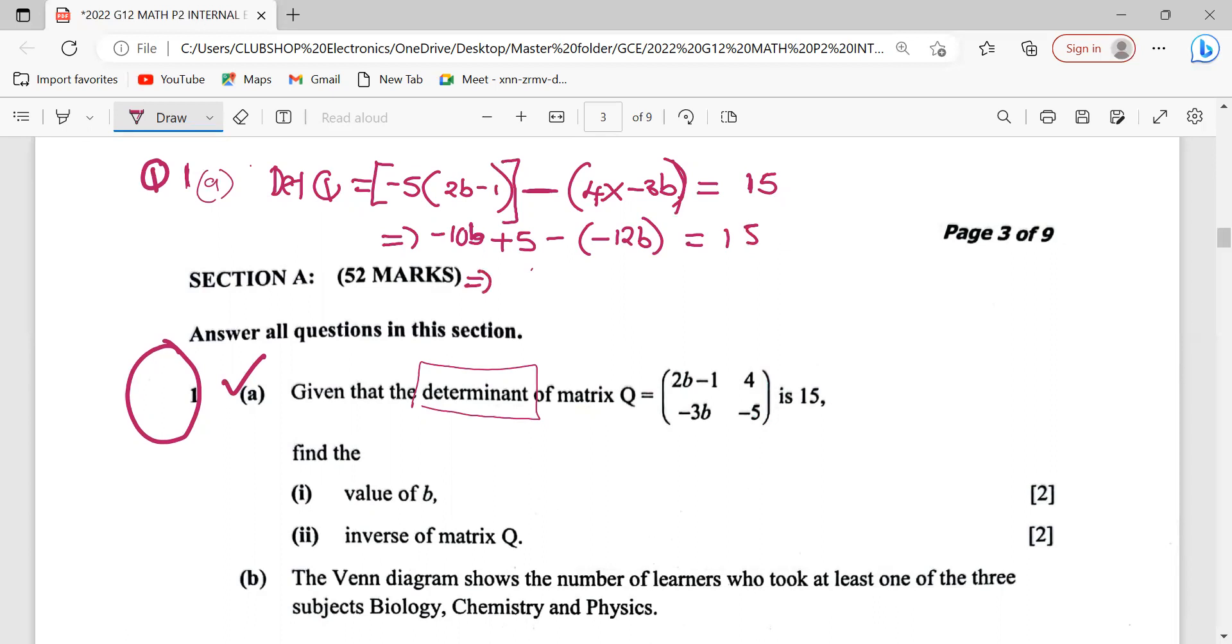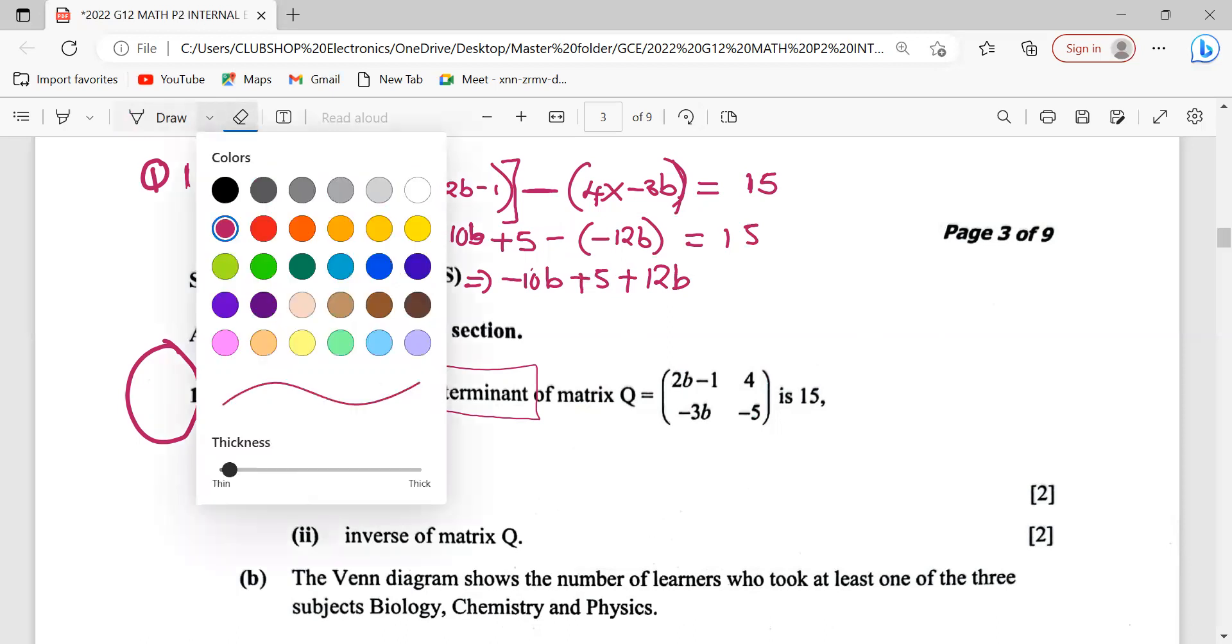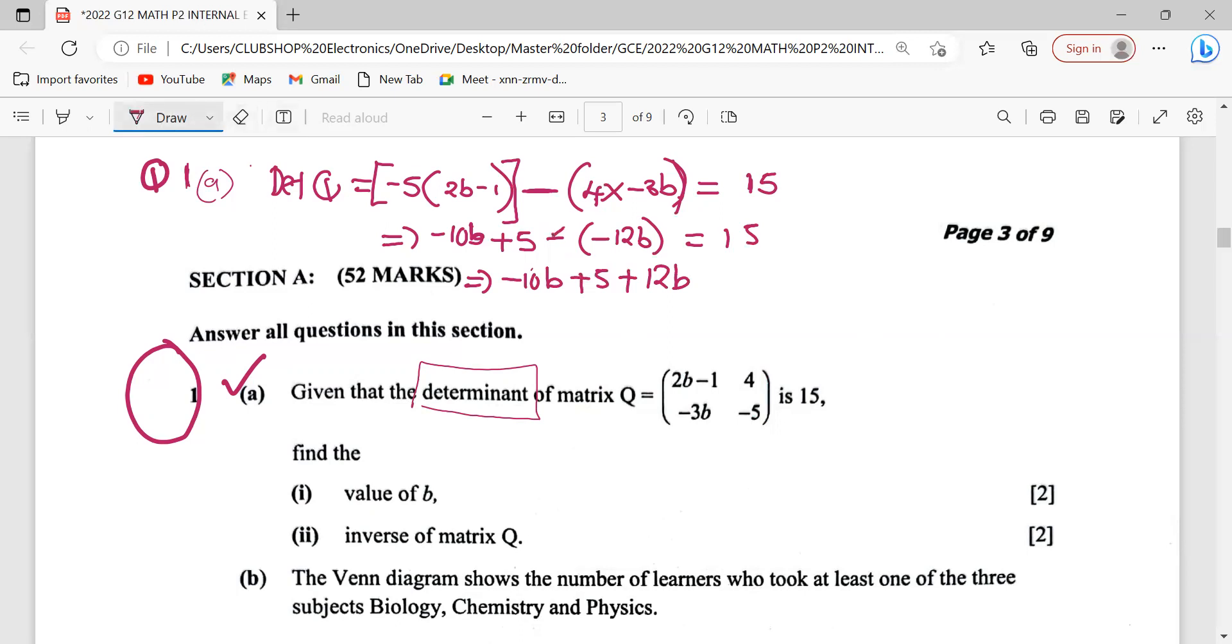We can maintain our negative 10b plus 5. Then here, we are going to multiply a negative number. Negative 1 by negative 12b is going to give you positive 12b. This negative by that negative is going to give you positive. So you can multiply this negative with that producing this positive sign.